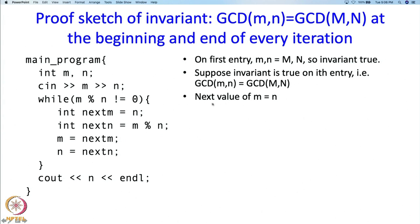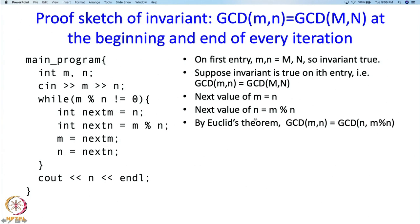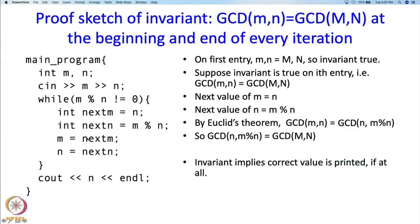So let us see what happens in this iteration. The next value of m is going to be n, and the next value of n is going to be m mod n. Note first that by Euclid's theorem, the GCD of the original values in m and n is equal to the GCD of the next values n and m mod n. Why? By Euclid's theorem, in the case where m mod n is not 0 — and the very fact that we entered the loop says that m mod n must not be 0. So by Euclid's theorem, the GCD of these values must be the GCD of the original contents of m and n. At the end we are placing these new values inside m and n, and therefore we have proved that the invariant holds at the end as well.